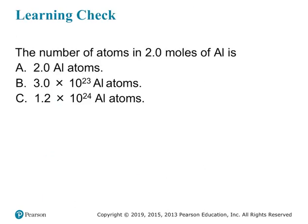Let's do a learning check. The number of atoms in two moles of aluminum is: A) two aluminum atoms, B) 3 times 10 to the 23rd aluminum atoms, or C) 1.2 times 10 to the 24th aluminum atoms. Pause the video and try this on your own first, then we'll do it together.